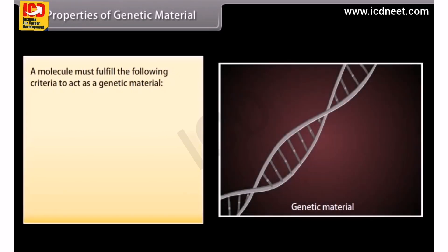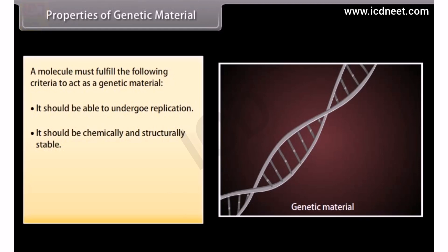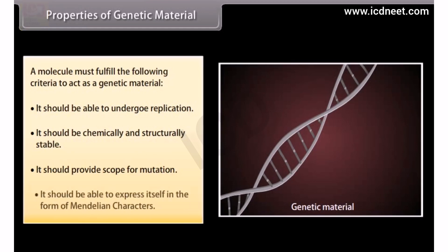A molecule must fulfill the following criteria to act as a genetic material: it should be able to undergo replication; it should be chemically and structurally stable; it should provide scope for mutation; and it should be able to express itself in the form of Mendelian characters.